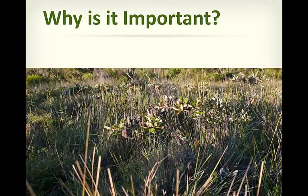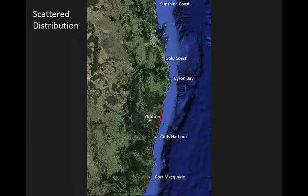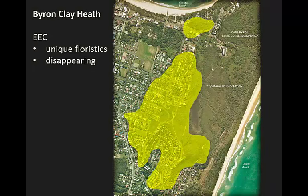So why is the clay heath important? Firstly, heathland on clay is generally rare because it can transform to forest if fire is excluded for several decades. It has a very scattered distribution along the east coast, occurring as tiny pockets at Coolum in south-east Queensland, this occurrence in Byron Bay, at Evans Head, a large expanse in Eurogear National Park totalling around 600–700 hectares, also down at South West Rocks, and a small extent in Crowdy Bay National Park near Taree.